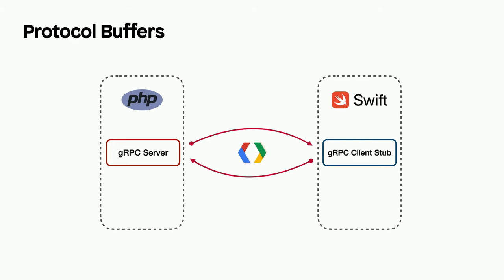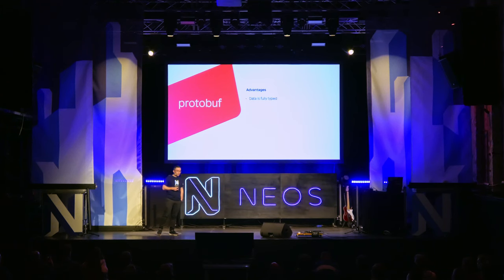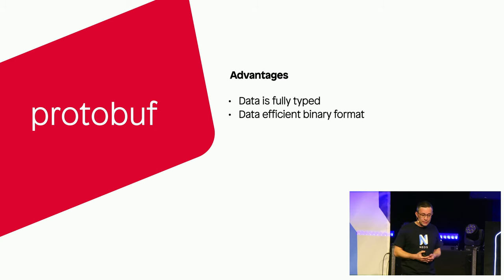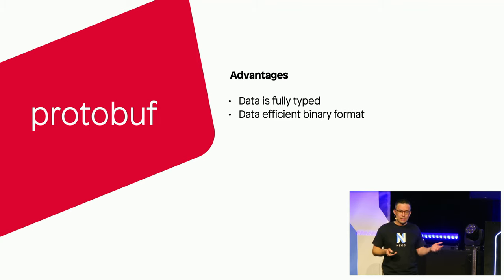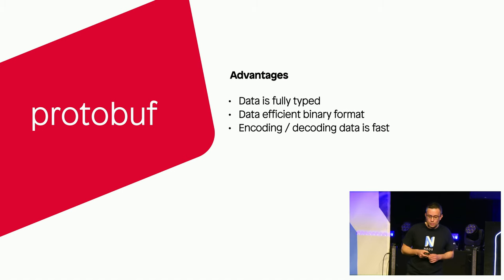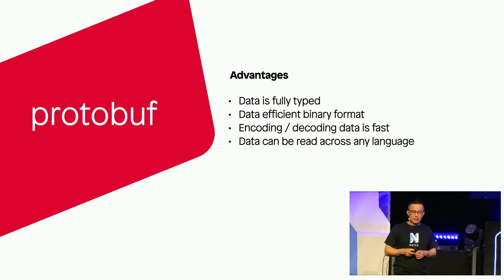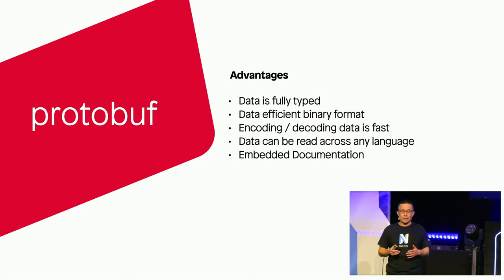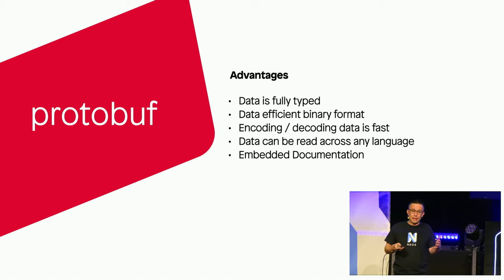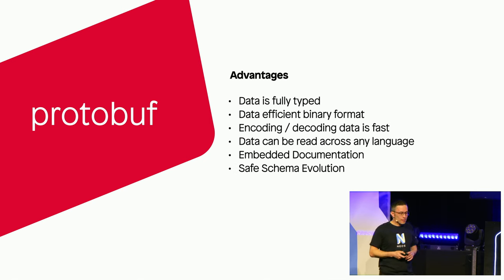Let's move to the IDL — the Interface Definition Language — which for gRPC is called Protocol Buffers, or Protobuf. Protocol Buffers is a language-agnostic binary serialization format with several advantages over text-based protocols like XML or JSON. It uses a fully defined schema to ensure data is strongly typed and validated. It has a compact binary format — about 10 times smaller and 100 times faster than XML — and supports seamless communication between systems written in different languages.